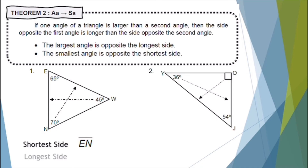For our longest side, the largest angle is angle N, which is 70 degrees, and the opposite side to it is line segment EW. Therefore, our longest side is line segment EW.